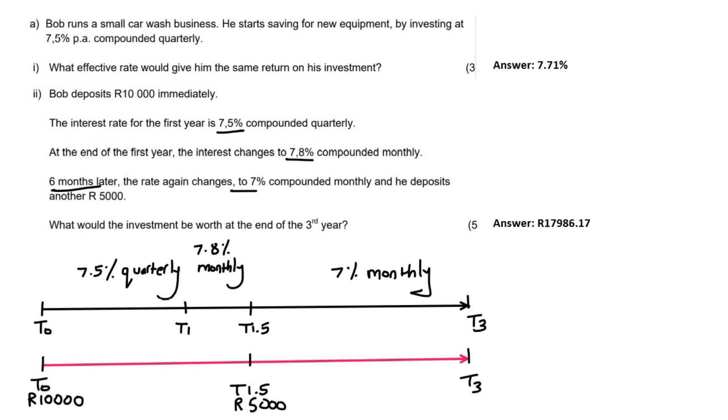Now the question says, how much is the investment worth at the end of the third year? So the way that I do these types of questions is the following. I look at the payments, so there's one and two, and I only look at one of them at a time. So the way that that works is I completely ignore this one for now, and I'm going to take this one, and I'm going to work out how much will that one be worth after three years. So I'm going to go all the way to three years.